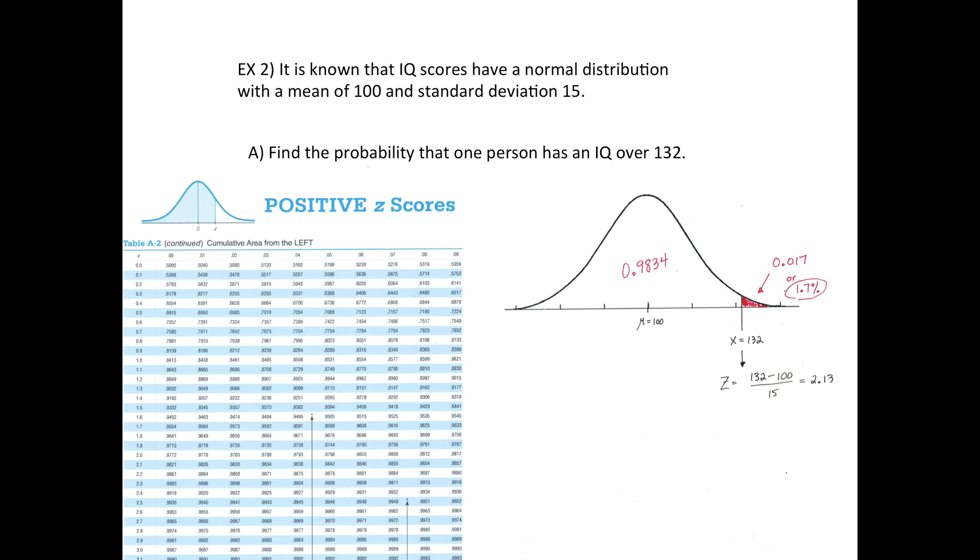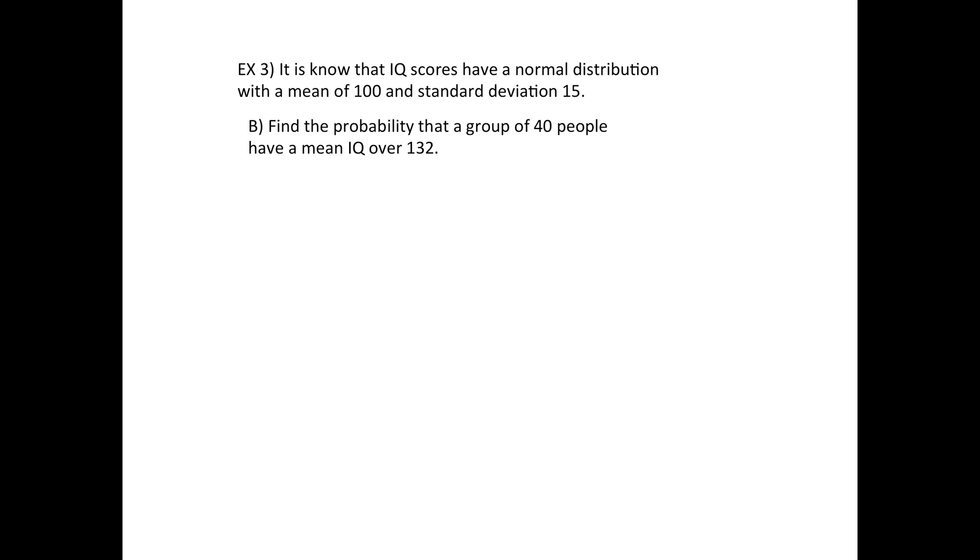Now what I'm going to do for part B is do basically the same thing except instead of one person, what if it was 40 people? So you randomly choose 40 people and their average IQ needs to be over 132. The only difference is in right here you need to divide by the square root of 40 people. That's how the standard deviation is affected.